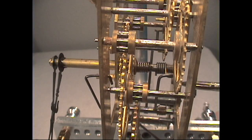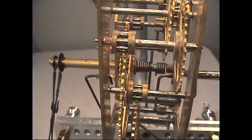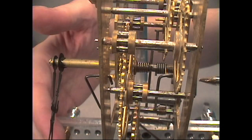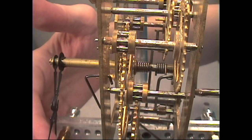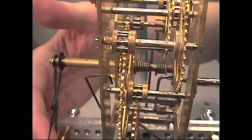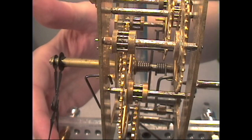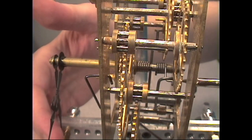In order to adjust the half hour strike, you can bend this lever that's connected to the arbor of the hammer to allow the hammer to strike either a little early or late on the half hour to match with the hands.